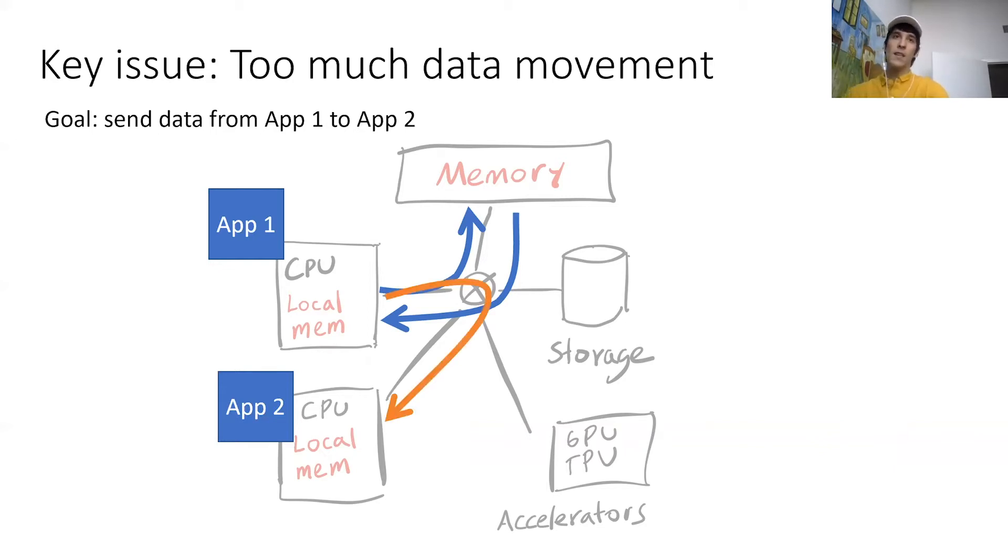And finally, the other application might actually need to store the data on its remote memory if either the data happens to be too big for the local cache or maybe the application is not yet ready to use the data. So we ended up with a bunch of data movement, and the sad thing about this example is that the data ends up in the same place anyway.